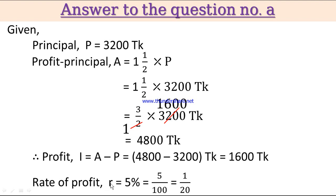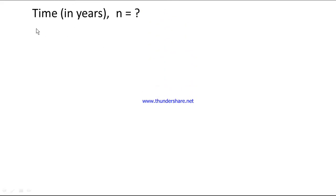The rate of profit r = 5% = 5/100 = 1/20. Time in years n is what we have to calculate.